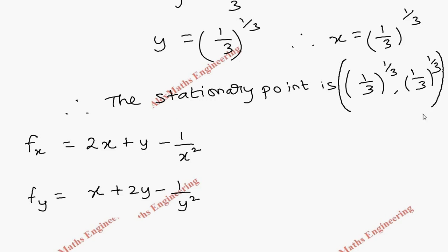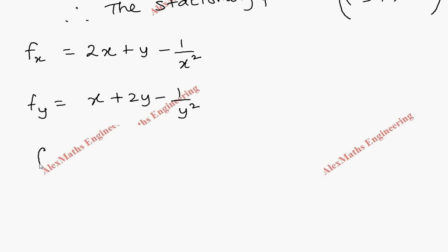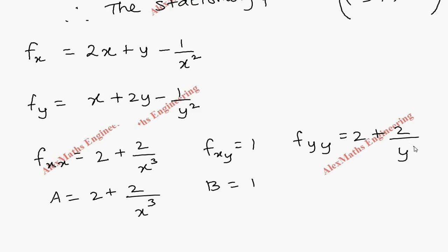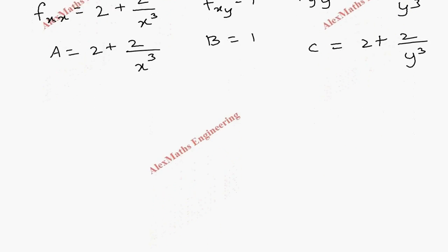Now we find the second-order partial derivatives. fxx = d/dx(fx) = 2 + 2/x³. This is our A. fxy = d/dx(fy) = 1. This is our B. fyy = d/dy(fy) = 2 + 2/y³. This is our C.